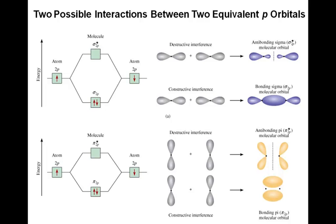There are a couple of different ways that 2p orbitals can overlap. They can line up along the x-axis, and we get an overlap that occurs on a line between the two nuclei. We get constructive interference and destructive interference, forming a bonding molecular orbital and an antibonding molecular orbital. Because the electron density occurs around a line between the two nuclei, they become sigma and sigma star. The star stands for antibonding orbitals — sigma is bonding, and sigma star is antibonding.